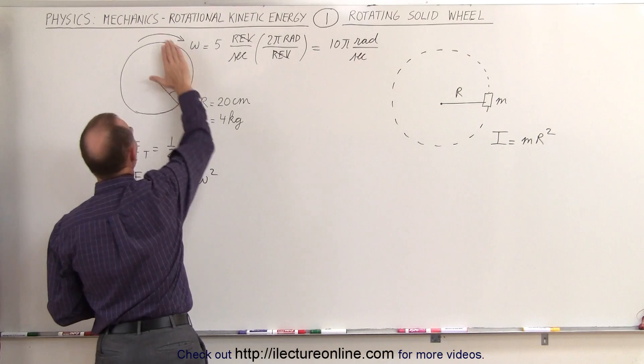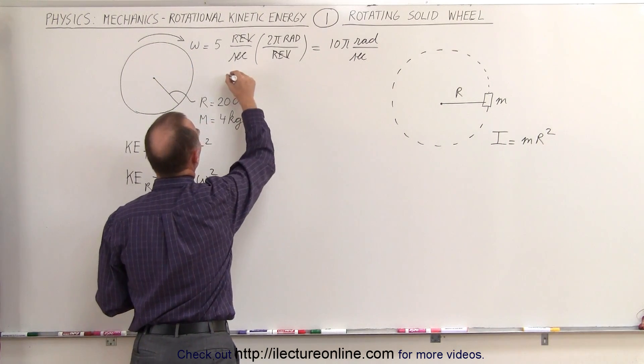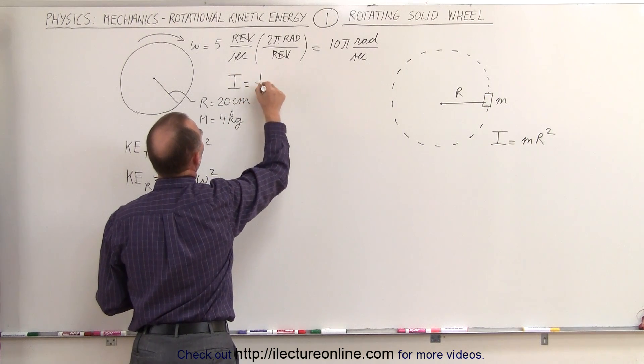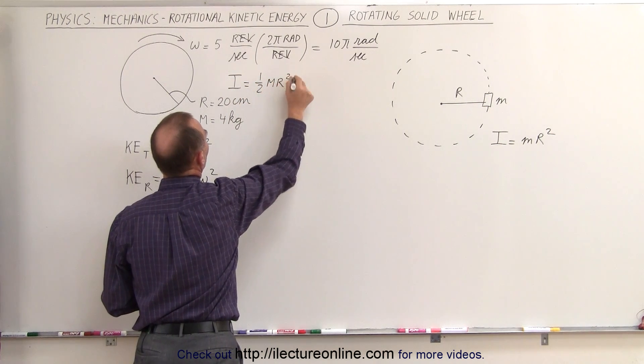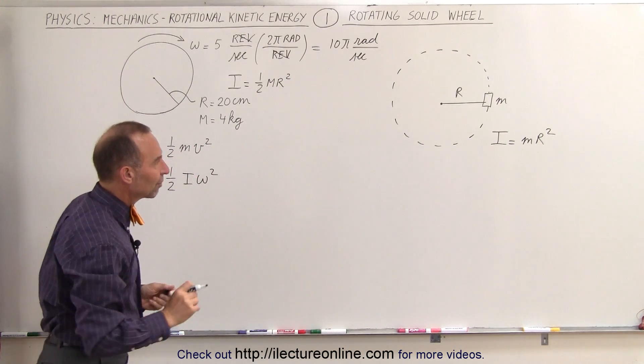With a solid disk, we have the mass distributed over the entire disk, and therefore the moment of inertia of a solid disk is actually ½mr² instead of mr² for a point mass at distance r away from the point of rotation.